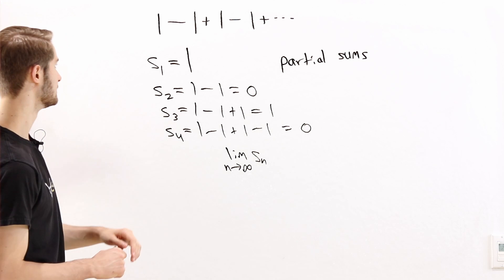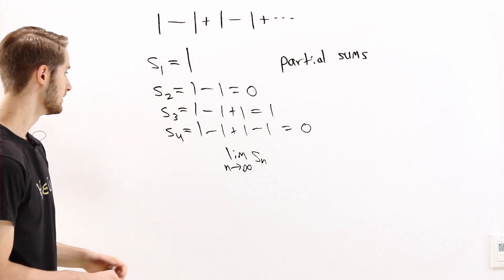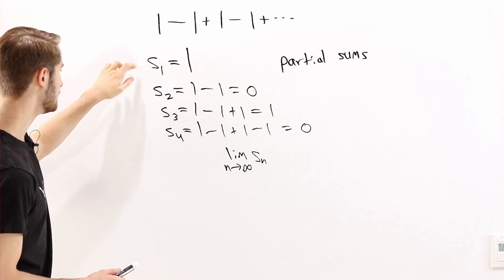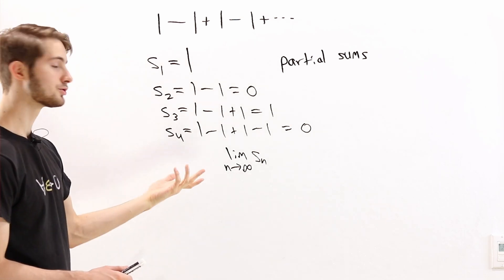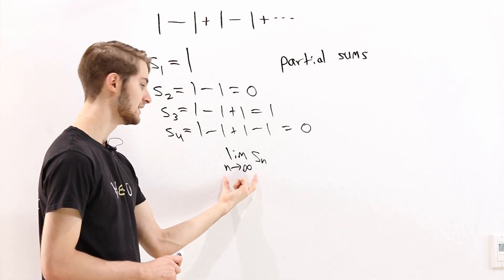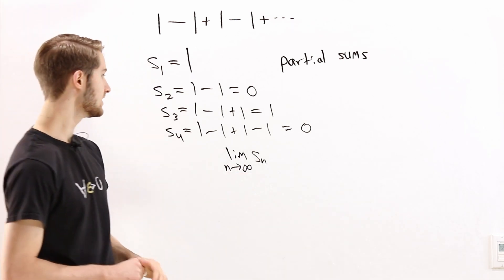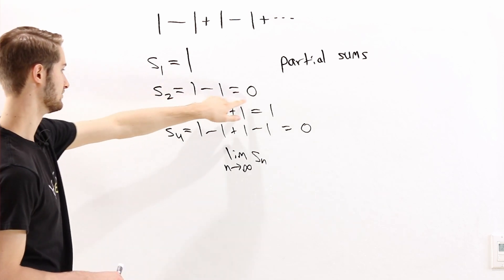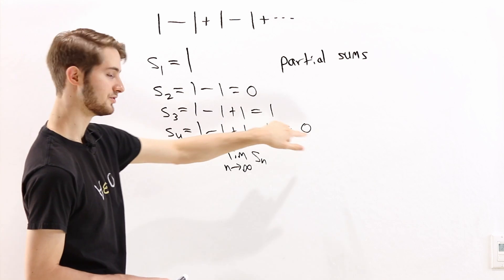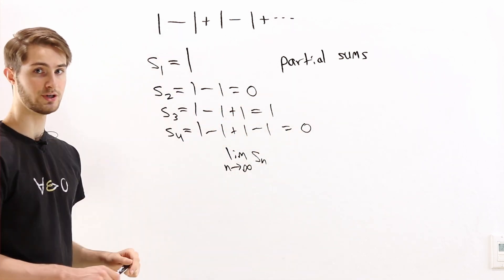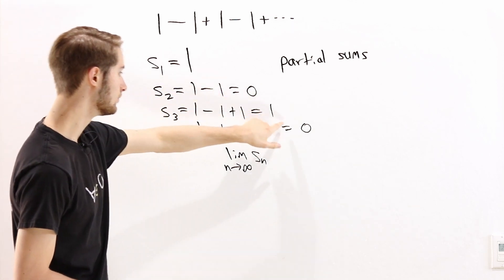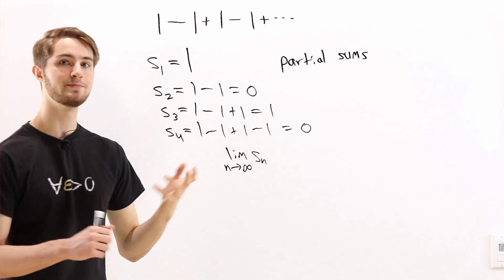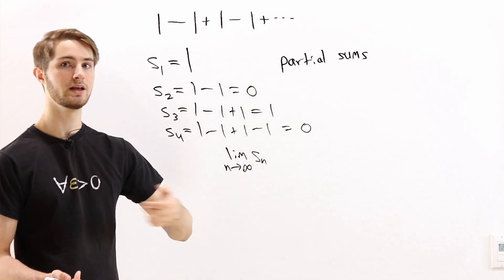So our original problem was about finding a sum of infinitely many numbers. But now we can just look at this sequence of partial sums S1, S2, S3, S4, and figure out what those numbers approach as n approaches infinity. S1 equals 1, S2 equals 0, S3 equals 1, S4 equals 0. If we keep calculating the partial sums, we continue the pattern: 1, 0, 1, 0, 1, 0, and so on to infinity. So the partial sums are always going to alternate back and forth between a value of 1 and a value of 0.